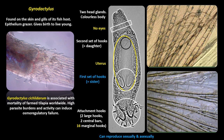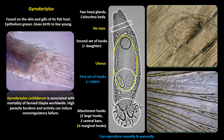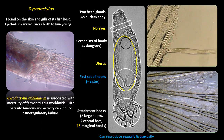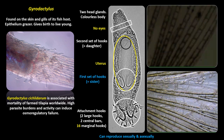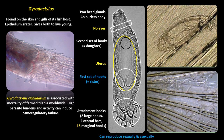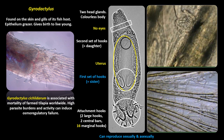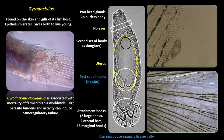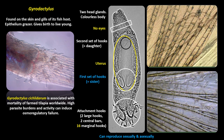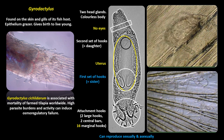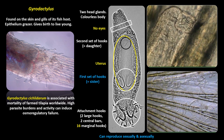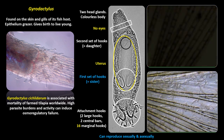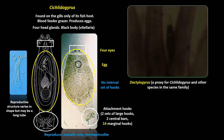I would now like to talk about the monogenia. Starting with Gyrodactylus — a small worm about 0.8 to 1 millimetre long, colourless, found on the skin and gills of its fish host and an epidermal grazer. It has no eyes, two large central hooks and 16 small hooks used to attach to its host. It gives birth to live young, and you can see the hooks of the daughter and a granddaughter inside the daughter. These parasites are very active and numbers on small fish can build up very quickly. One species, Gyrodactylus cyclodarum, has been responsible for the mortality of tilapia fry worldwide.